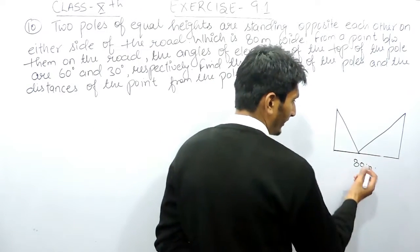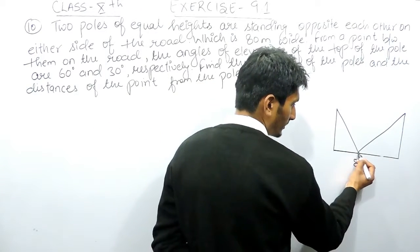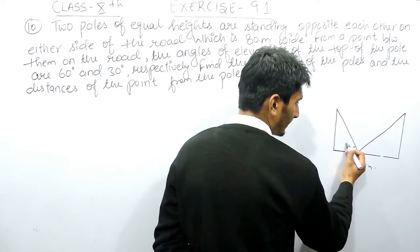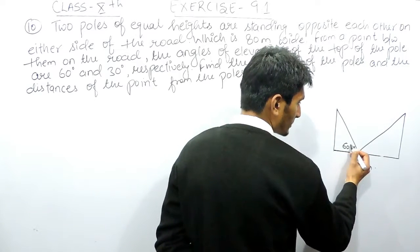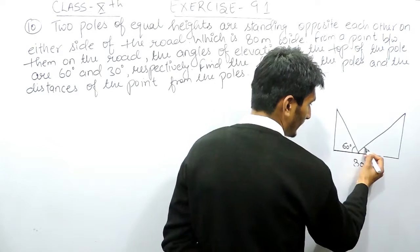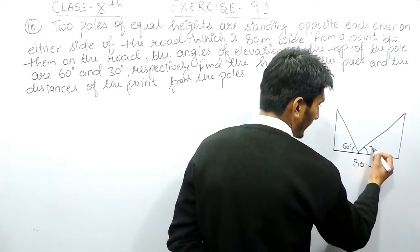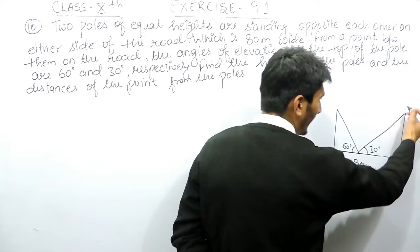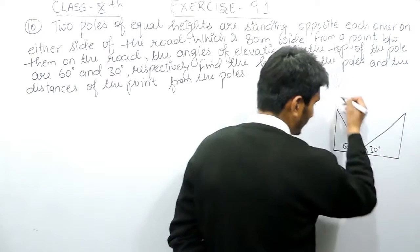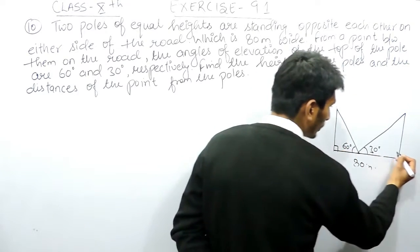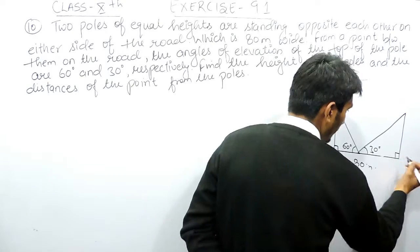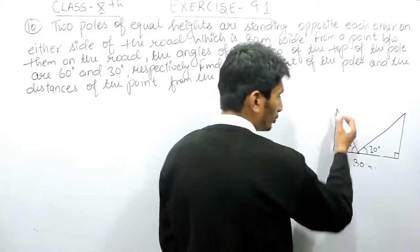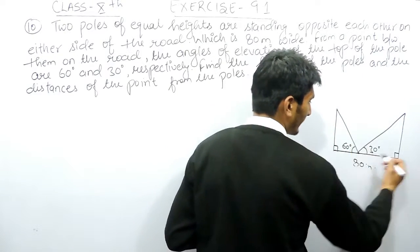If I place this point here, the closer pole will give a greater angle. So the nearer pole gives 60 degrees and the farther pole gives the smaller angle of 30 degrees. Since both poles are perpendicular to the ground, we can form two right-angle triangles.